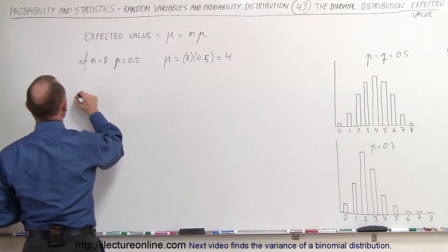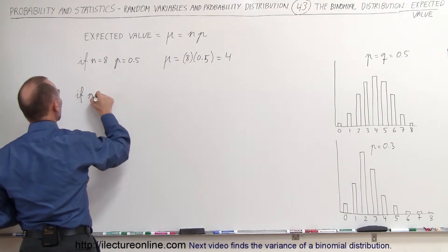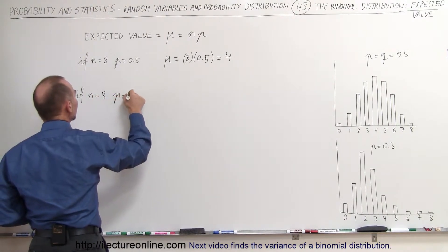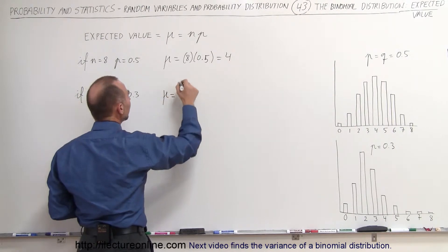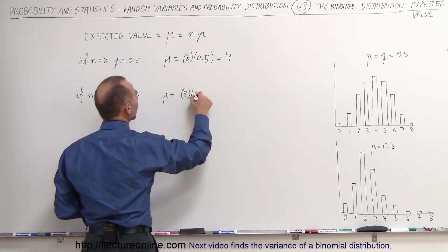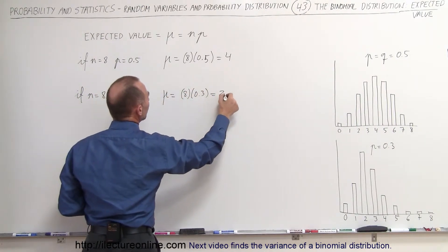But what if, in the case, if N, the number of trials, is equal to eight, but the P is equal to just 0.3, what do we get? Well, here the expected value mu is equal to eight times 0.3, which is equal to 2.4.